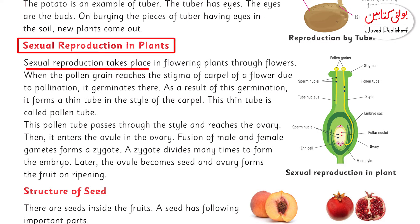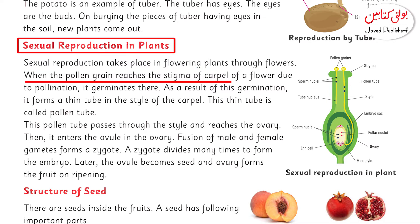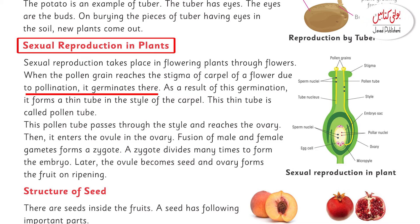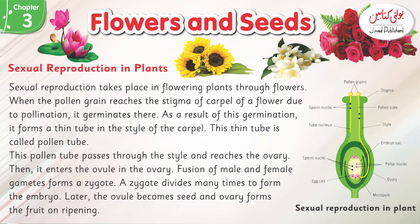Sexual reproduction takes place in flowering plants through flowers. When the pollen grains reach the stigma of the carpel of a flower due to pollination, the process of germination begins there.